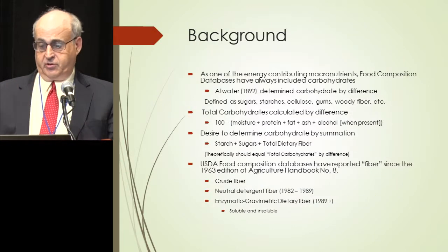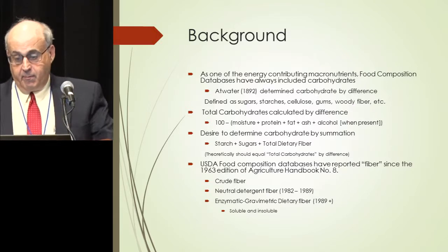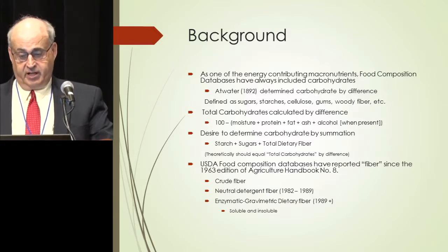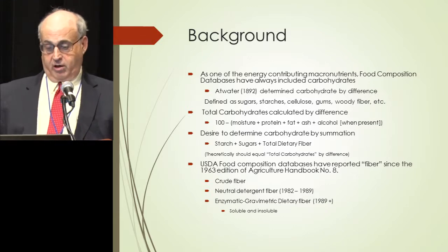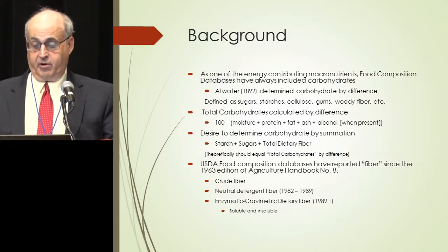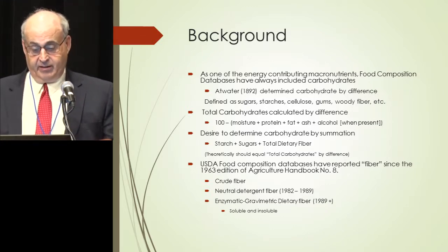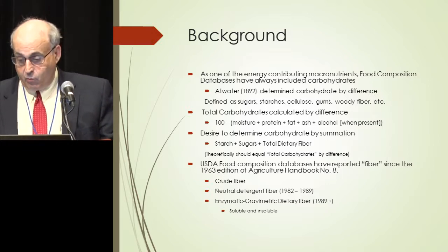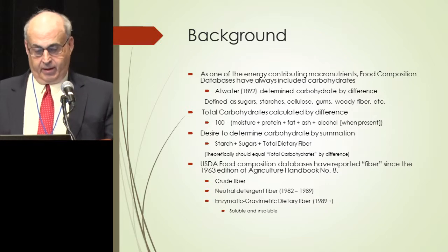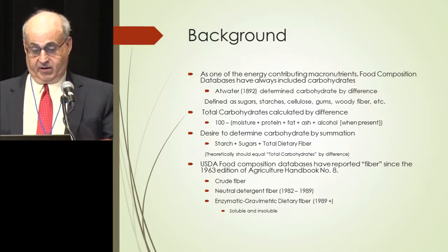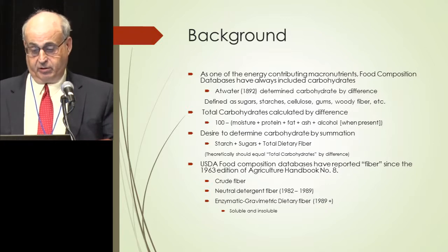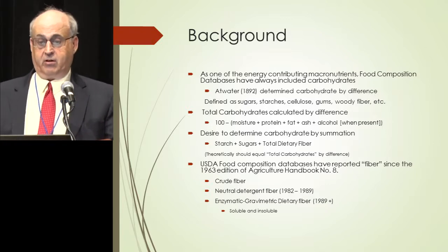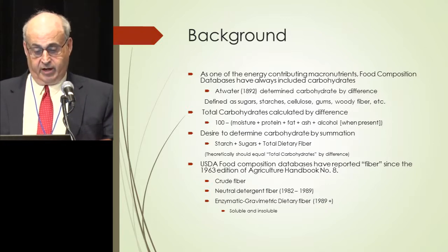As one of the energy contributing macronutrients, food composition databases have always included carbohydrates. Dr. Atwater in 1892 determined carbohydrate by difference, and he defined it as sugars, starches, cellulose, gums, woody fiber, etc. Today we calculate total carbohydrate by subtracting the sum of moisture, protein, fat, and ash — plus alcohol when present — from 100.